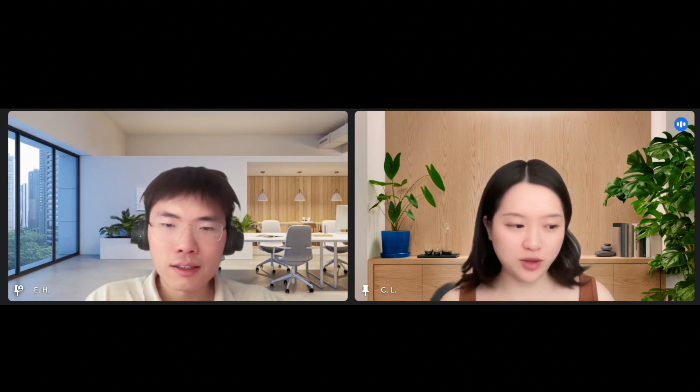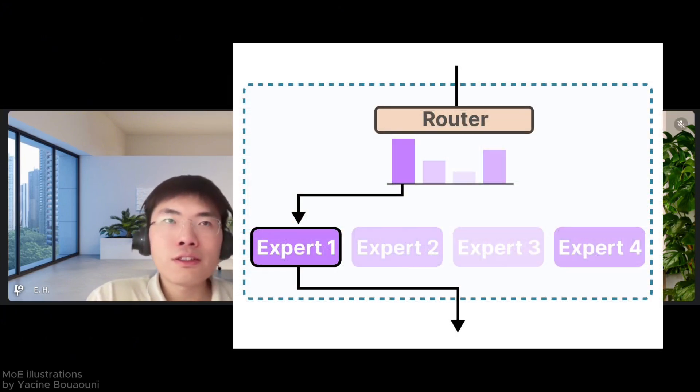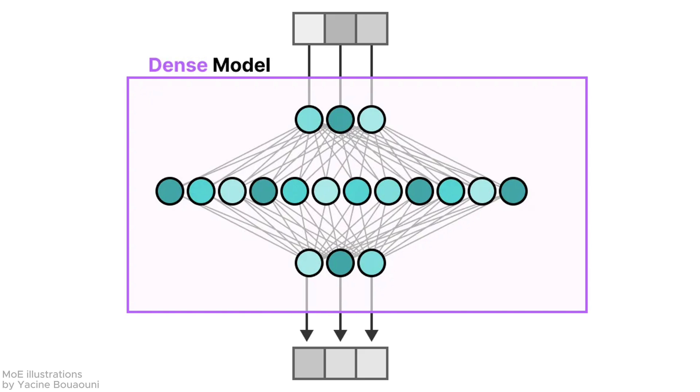Some of us might not get familiar with the term mixture of experts, so do you mind giving us a quick overview? You can think of it as a single model, but it combines several models together. Depending on what your question is, it selectively activates some of the experts to answer your question. You might have heard of Llama models, GPT models already. Most of these models are dense models. All of the neurons are mostly activated in the model inference, that's why they are called dense.